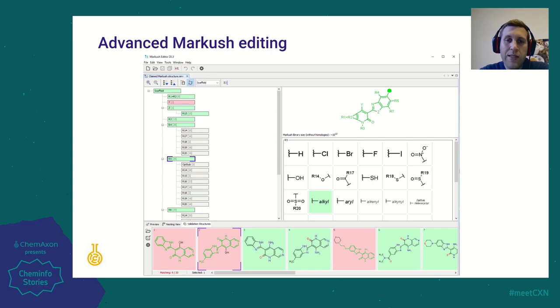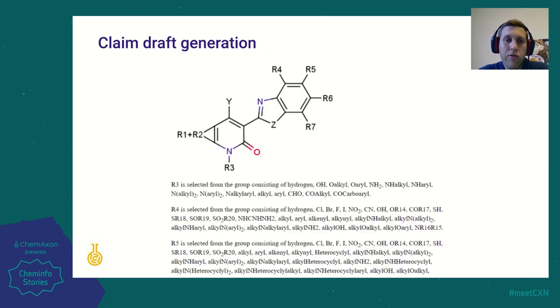At the end of the day, you would like to see the Markush structure in a text format. Markush Editor can automatically generate the claim draft and list of exemplified structures with images and IUPAC names. This way you can focus on legal compliant wording instead of creating endless lists of R group definitions.